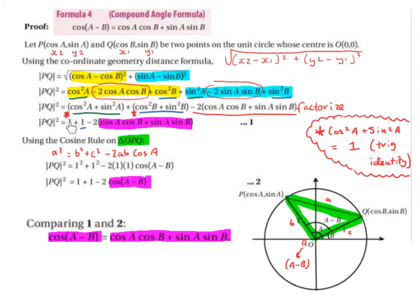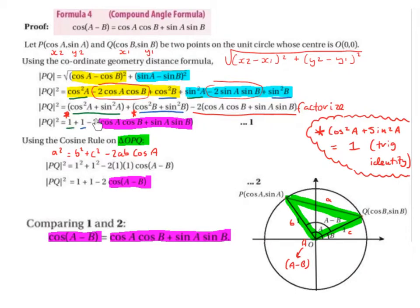Now, cos²a + sin²a = 1 and cos²b + sin²b = 1. This is a trigonometric identity: cos²x + sin²x = 1 for any variable, so long as the angle is the same and there's a plus between them. This is given in your formula book. So PQ² = 1 + 1 - 2(cos(a)cos(b) + sin(a)sin(b)).